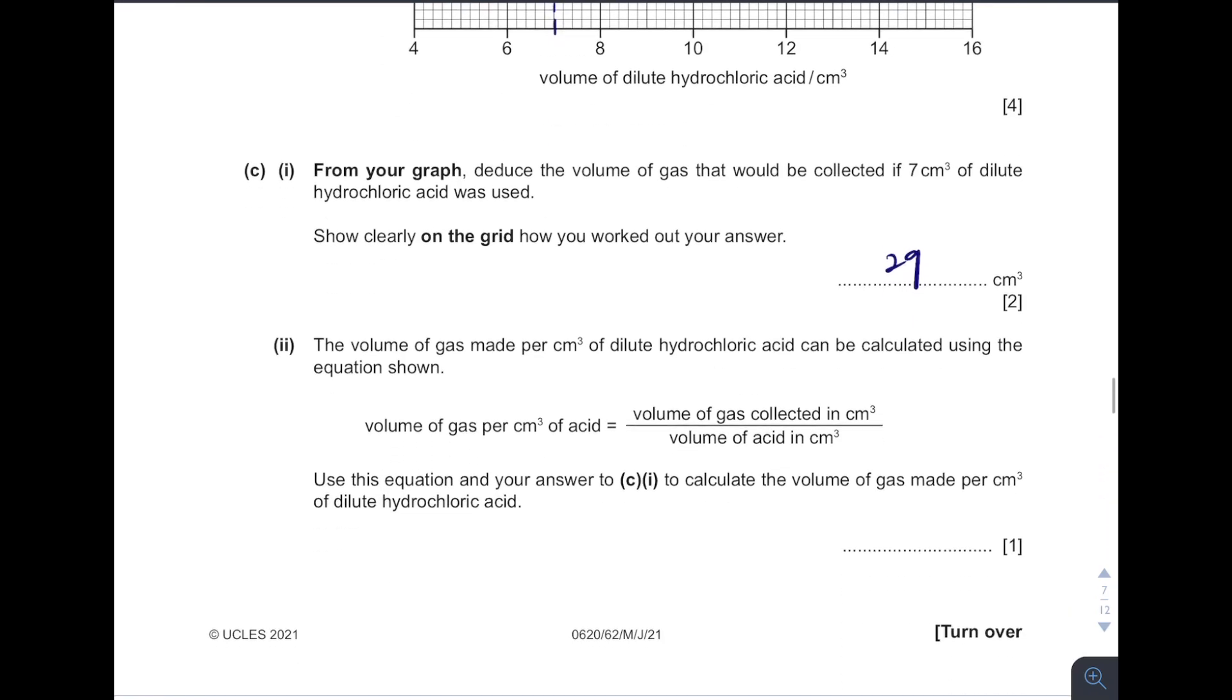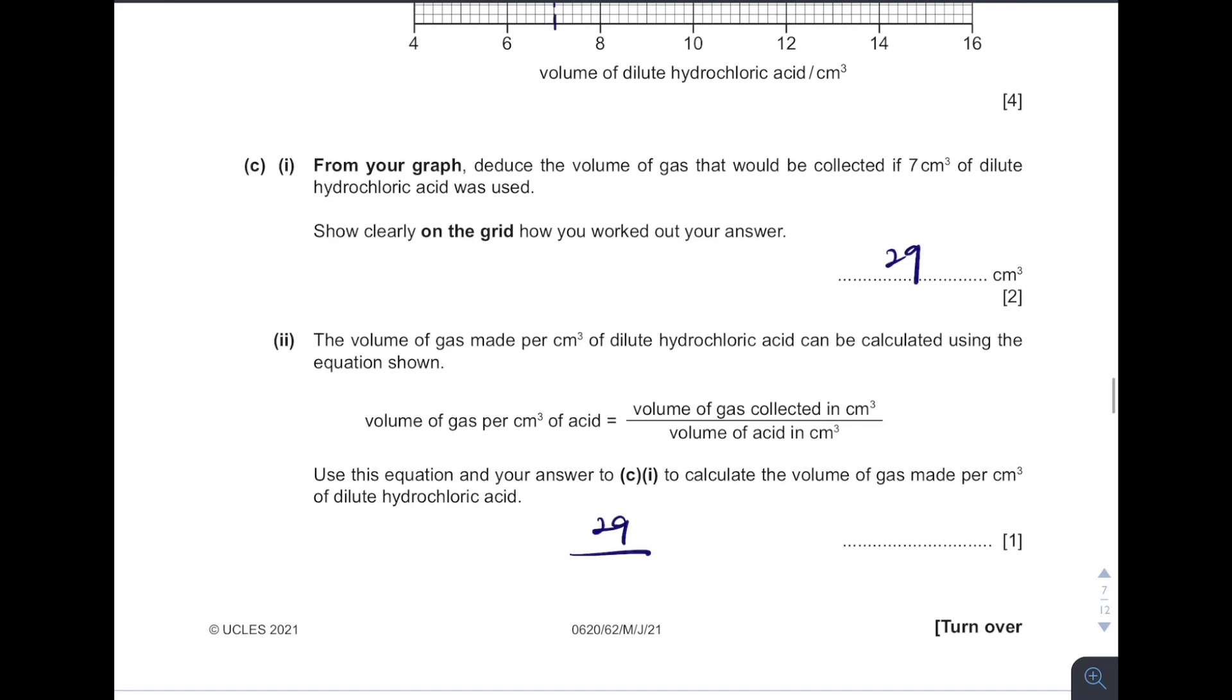Then, use this equation and your answer in C1. Calculate the volumes of gas made per cm3 of the acid. So if volumes of gas collected is 29, 29 divided by volumes of acid, volumes of acid is 7. So which eventually will get about 4.14.